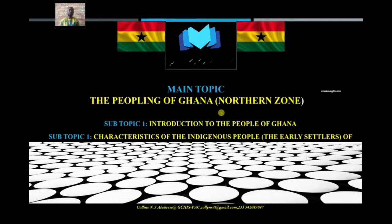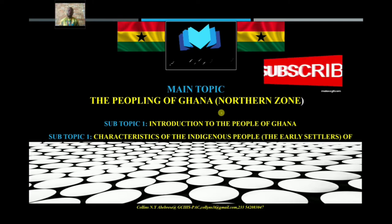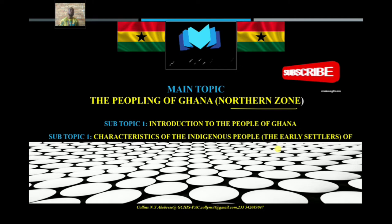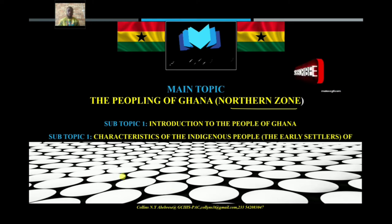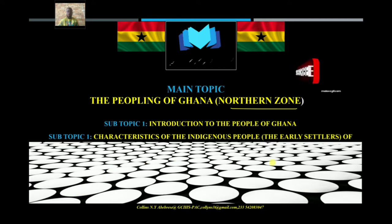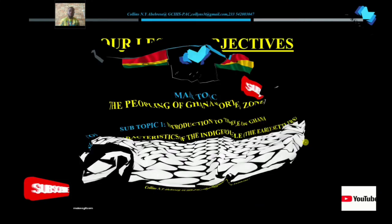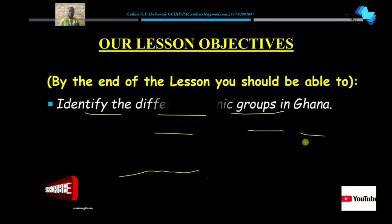Today we will focus on a zone, a region, a part of Ghana, and look at the people that live in that area. The part we are going to focus on today is the northern part. We are going to look at the northern part of Ghana and learn about the people that live there. This is a topic for Form 2 SHS history class. We will look at the characteristics of the indigenous people that live in the northern part of Ghana.